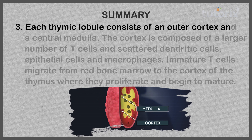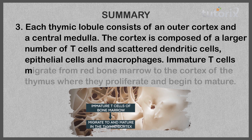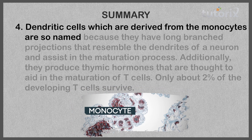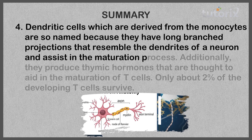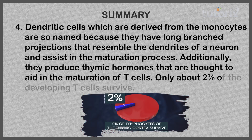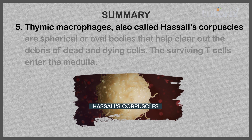Each thymic lobe consists of an outer cortex and a central medulla. The cortex is composed of a large number of T cells, scattered dendritic cells, epithelial cells, and macrophages. Immature T cells migrate from red bone marrow to the cortex where they proliferate and begin to mature. Dendritic cells, derived from monocytes, have long branching projections resembling neuronal dendrites and assist in T cell maturation; they also produce thymic hormones. Only about two percent of developing T cells survive.